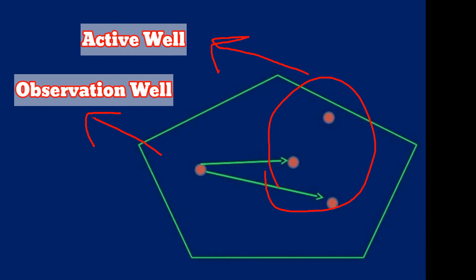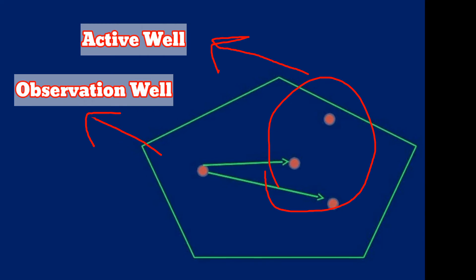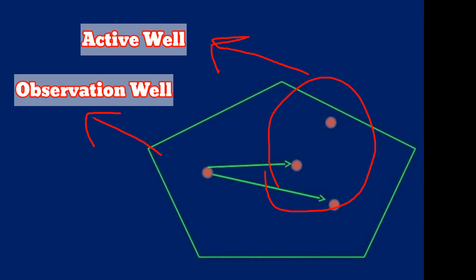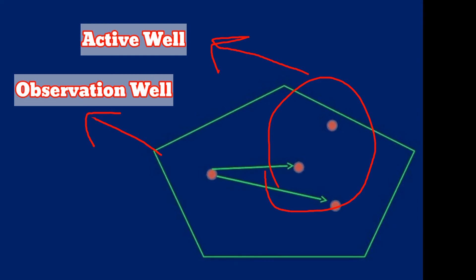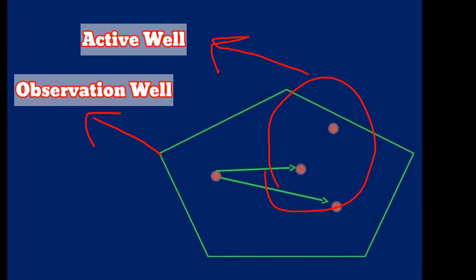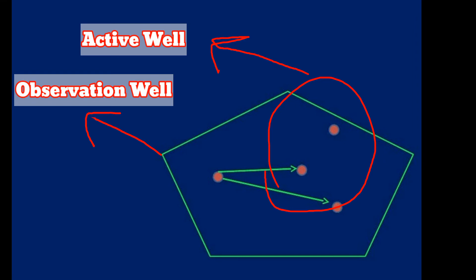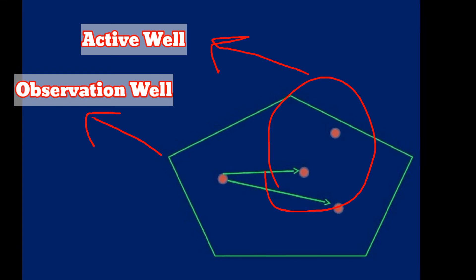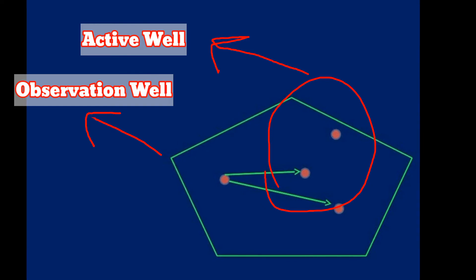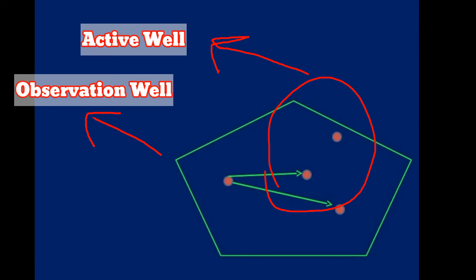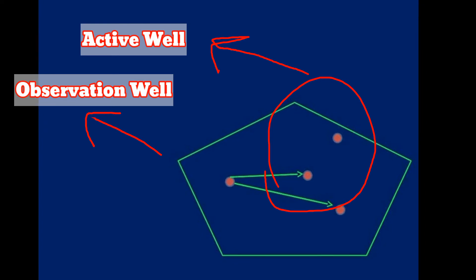So, for conducting the interference test in a reservoir, the pressure recorder is lowered down into the observation well, which is closed after achieving constant rate of production. Due to variation of flow rate of production, a pressure impulse will be created in the observation well.